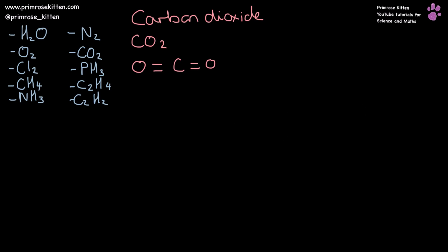Carbon dioxide is a double bonded compound. We have oxygen, carbon and oxygen. Now double bonds are going to indicate four electrons. So one, two, three, four, one, two, three, four. Carbon has four electrons on its outer shell. So it's already used up all of those. One, two, three, four.